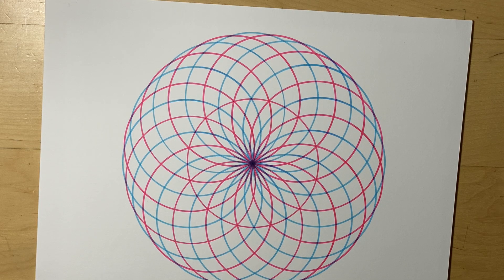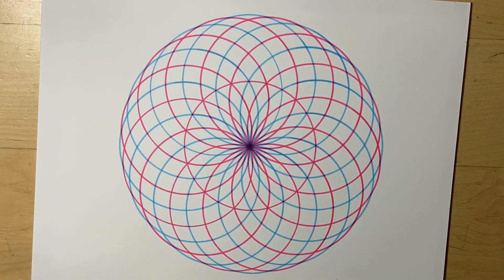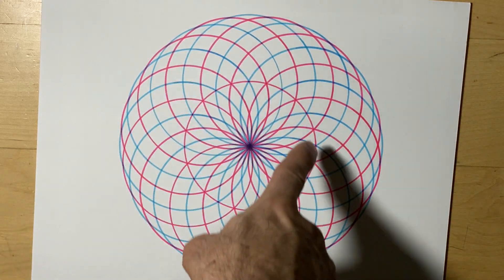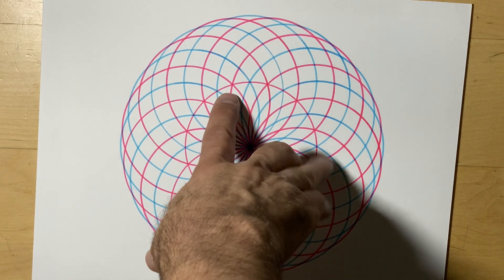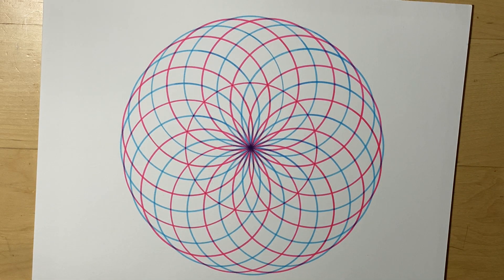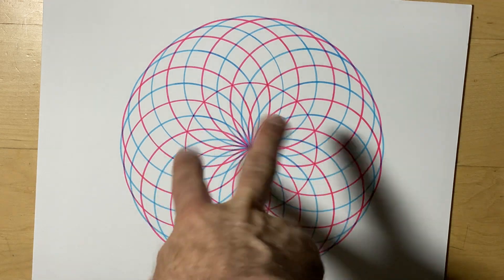We're going to be making this design. It's basically based off of the seed of life pattern where there's six flower petals and we're going to continue to add more petals around. If you'd like, you can add this extra circle where the petals end. Some people like that circle, some don't. I like the two tones.